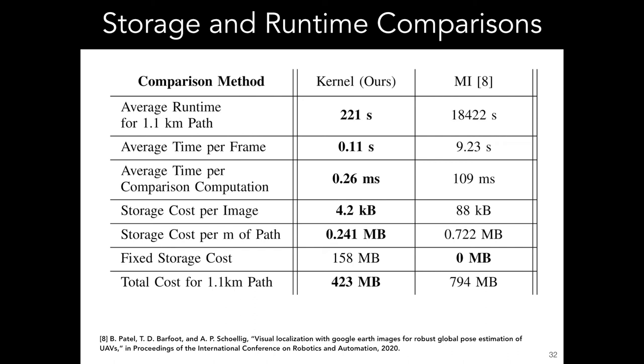We also see an improvement in the storage costs. Because we are only storing the 1,000 dimensional vector, each image takes 4.2 kilobytes of space, compared with 88 kilobytes for the whole image. Our method does have the additional cost of storing the autoencoder weights on the UAV, but this is a fixed cost per path and becomes more economical with longer paths. In particular, for this 1.1 kilometer path, even with the autoencoder weights, we still have a lower overall storage cost.